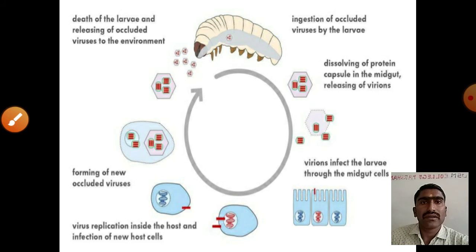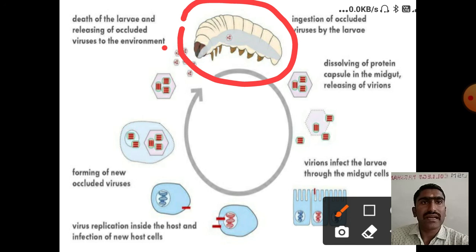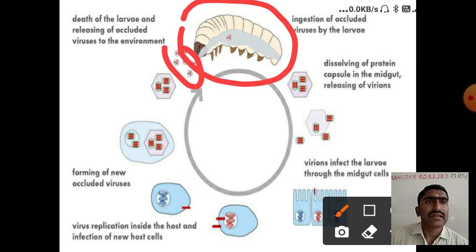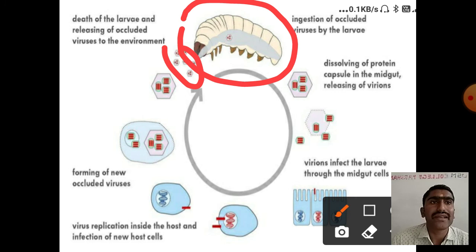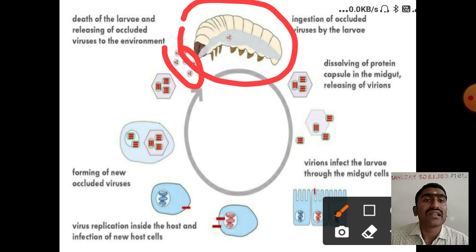In the diagram, this is the larvae and these are the occlusion viruses. When that virus is ingested by the larvae, it dissolves the capsules in the midgut, releasing virions. Those virions infect the larvae through the midgut cells.